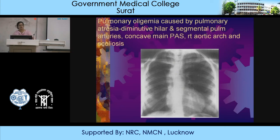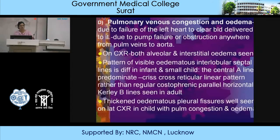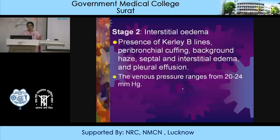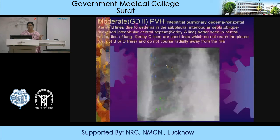Pulmonary venous congestion and edema may result due to failure of the left heart to clear blood delivered to it, due to pump failure or obstruction. On chest X-ray, both alveolar and interstitial edema will be seen. The pattern of interlobular septal lines differs in infants and small children versus adults: in infants, central A lines predominate (criss-cross reticular linear pattern), rather than the regular postero-phrenic parallel horizontal Kerley B lines seen in adults.